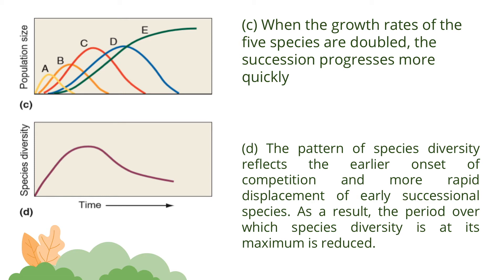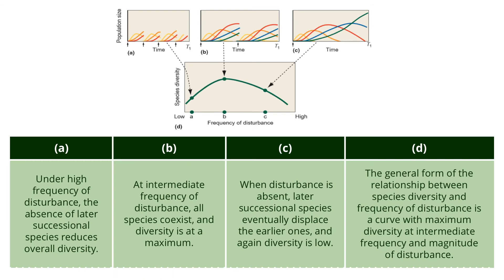As a result, the period over which species diversity is at its maximum is reduced. The next figure shows the patterns of succession for five hypothetical plant species under three levels of disturbance frequency: frequent, intermediate, and none. Graph A shows that under high frequency of disturbance, the absence of later successional species reduces overall diversity. Graph B displays the intermediate frequency of disturbance wherein all species coexist and diversity is at a maximum. Graph C depicts that when disturbance is absent, later successional species eventually displace the earlier ones, and again diversity is low.